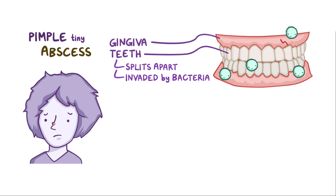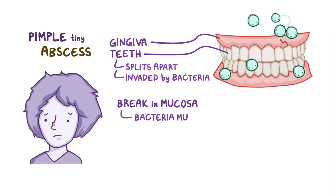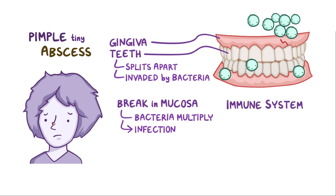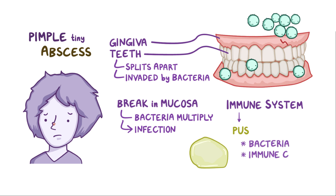In a healthy mouth, normal or commensal bacteria thrive but don't cause disease. However, any cut or break in the mucosa is an invitation for bacteria to dive in and multiply, causing an infection. When that happens, the immune system typically responds and a battle ensues, with the result being pus — a mixture of bacteria, immune cells, and dead tissue.